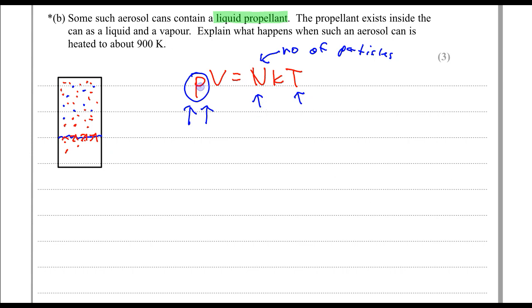So the increase in pressure would be more rapid compared to the non-liquid propellant, and it would explode even faster, without reaching about 900 Kelvin.